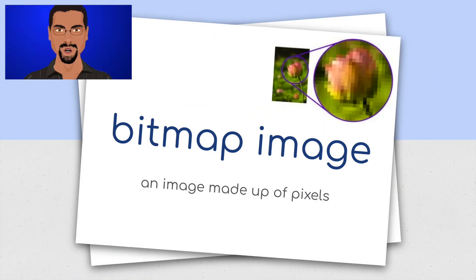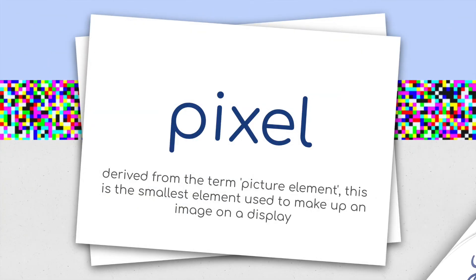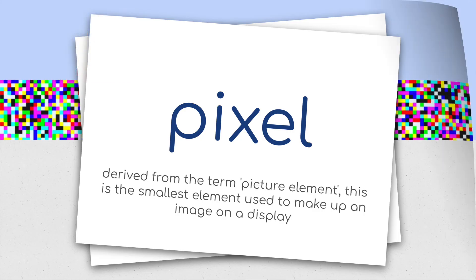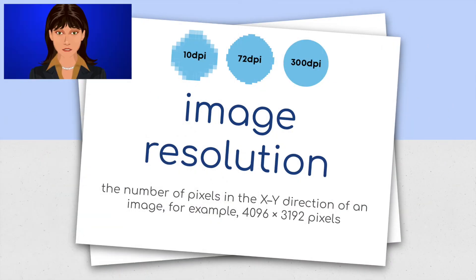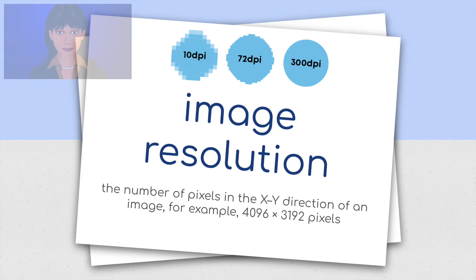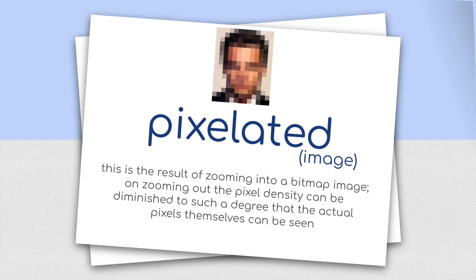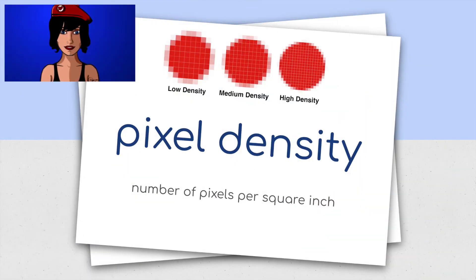Bitmap image: an image made up of pixels. A pixel, derived from the term picture element, is the smallest element used to make up an image on a display. Image resolution: the number of pixels in the x-y direction of an image, for example 4096 by 3192 pixels. Pixelated image: this is the result of zooming into a bitmap image. On zooming in, the pixel density can be diminished to such a degree that the actual pixels themselves can be seen. Pixel density: number of pixels per square inch.